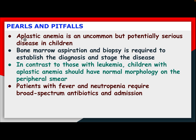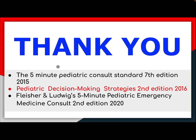Pearls and pitfalls. Aplastic anemia is an uncommon but potentially serious disease in children. Bone marrow aspiration and biopsy is required to establish the diagnosis and stage the disease. In contrast to those with leukemia, children with aplastic anemia should have normal morphology on the peripheral smear. Patients with fever and neutropenia require broad-spectrum antibiotics and admission. Thank you.